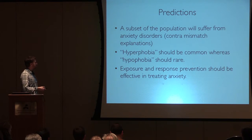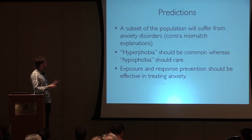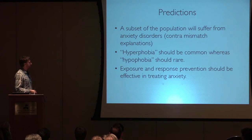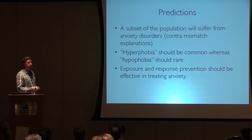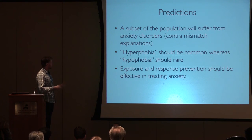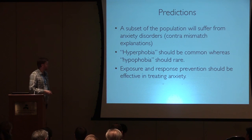There are some predictions from this model. A subset of the population — not the entire population — will suffer from anxiety disorders in the sense that they are more likely to experience fear than they should. This is different from a mismatch explanation, which would predict that the entire population shifts. Being too afraid should be common, whereas not being afraid enough should be rarer. The model also nicely accounts for how exposure and response therapy can be an effective intervention. Thanks so much.